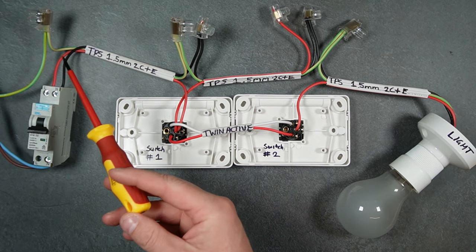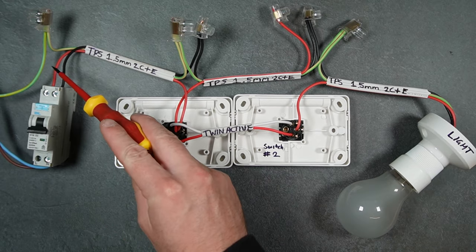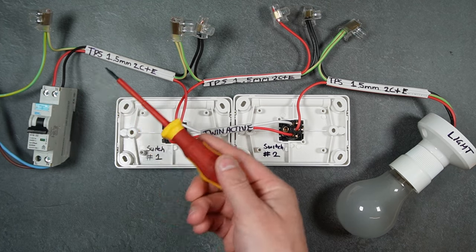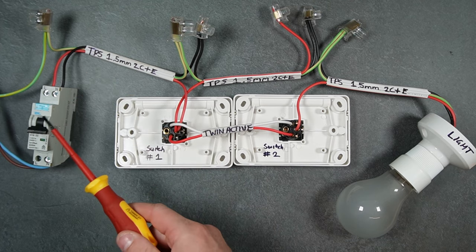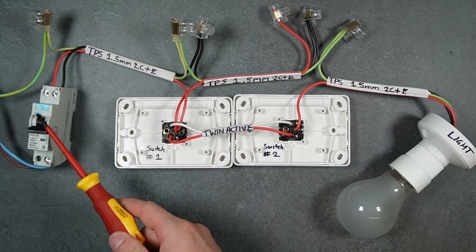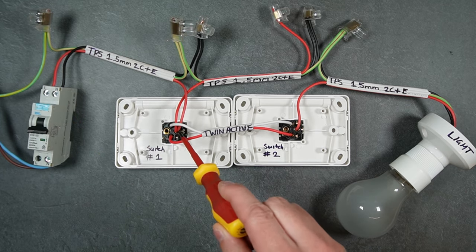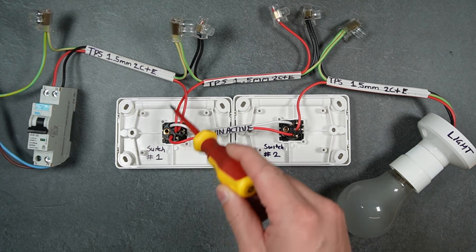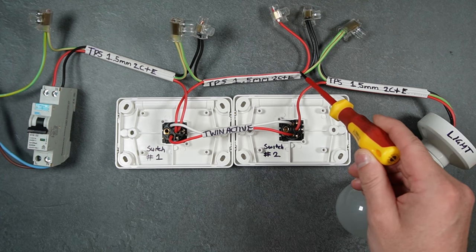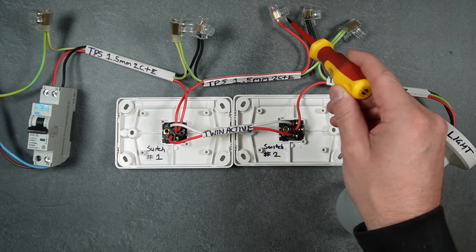At the start of the circuit, the red active is called a hard active, and that's because it always has power on it unless it's isolated from the switchboard. The hard active will go into the common of switch number one and join with another active that goes over to switch number two, and it'll go into a connector.